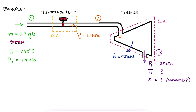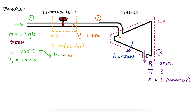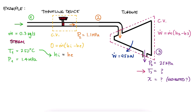What we know about the throttling device is that the inlet and exit enthalpy values are assumed to be the same. So if we know the inlet temperature, we can find the inlet enthalpy, and this is also going to be the value for the exit enthalpy. For the turbine, the power output is the mass flow rate times the change in specific enthalpy, H2 minus H3. Since what we want to find is the exhaust temperature, and temperature is directly related to enthalpy, what we really want to find is H3, the exhaust specific enthalpy of the turbine.